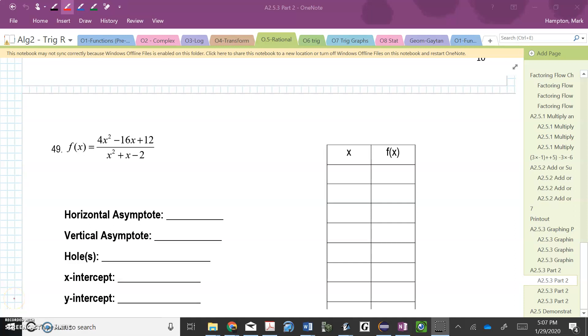This happens to be problem 49 off of A2.5.3, part 2. First step is always going to be to factor these tops and bottoms. So I'm going to start with the GCF off of the top. And I can see that the bottom is going to factor into X plus 2 and X minus 1. If you need practice factoring, you should be doing that on your own.